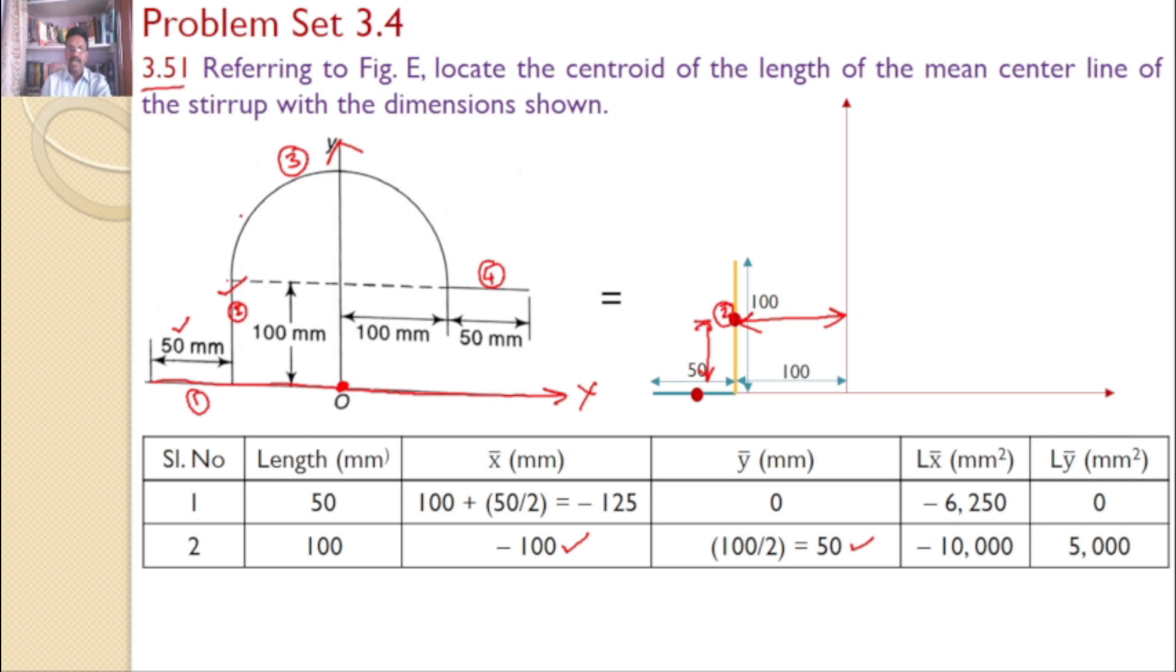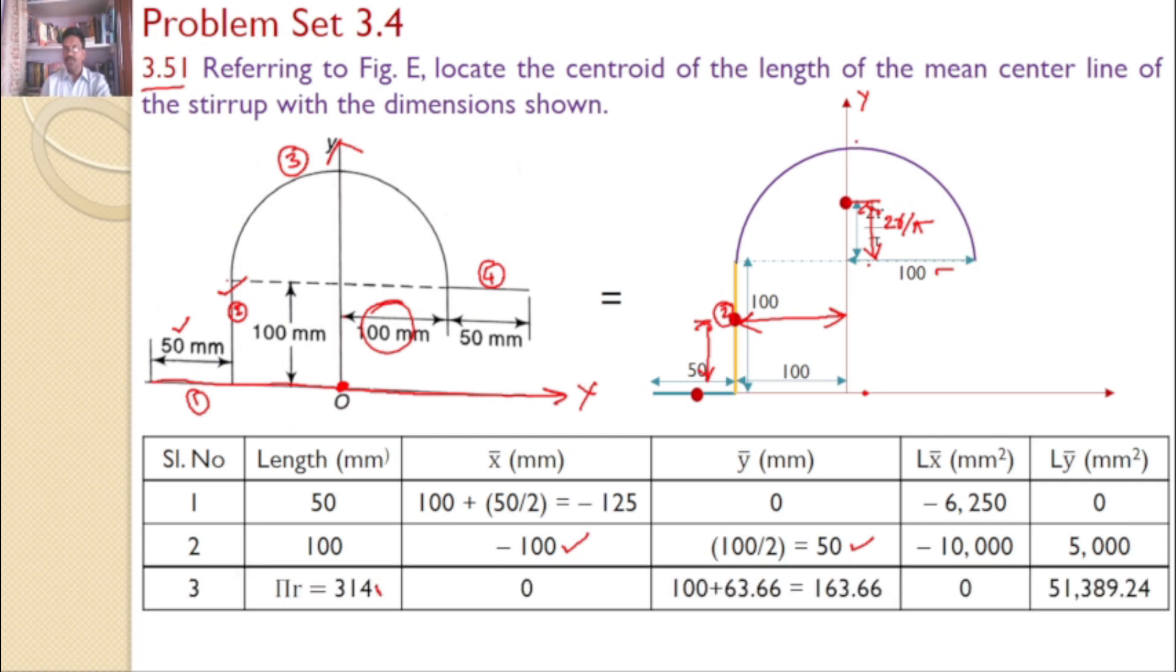Now, consider the third line, which is a semicircle. The radius of the semicircle is equal to 100, as given. The centroid for the semicircle is here, exactly on the y-axis. So the x-coordinate is 0. This distance, you know the formula, is 2r by π. I can calculate the y-coordinate from this point to this point: that is 100 plus 2r by π. The length of the arc is π times r.